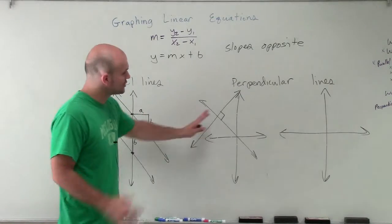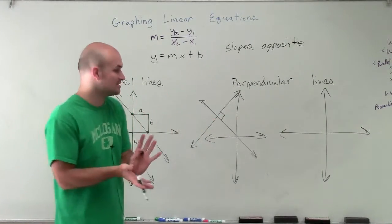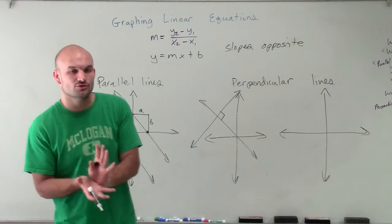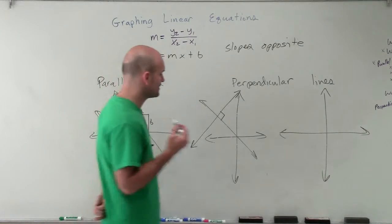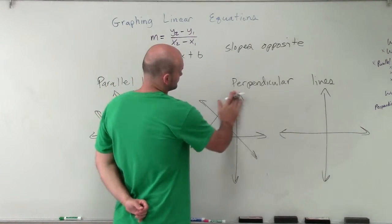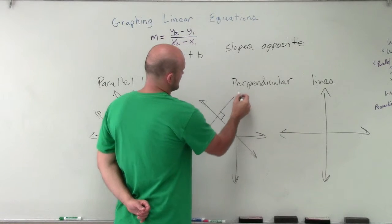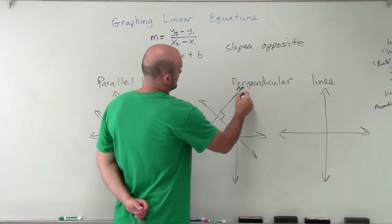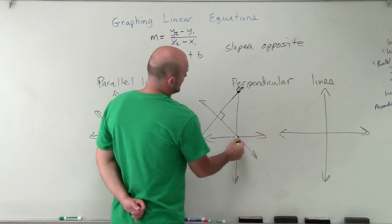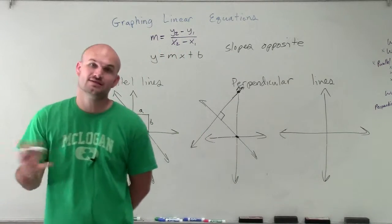All perpendicular lines are going to have an intersection where the angle between the two lines is going to be 90 degrees. Now, you notice here, let me kind of extend this line here a little bit. You notice here that these two perpendicular lines have different y-intercepts, and that is sometimes the case.